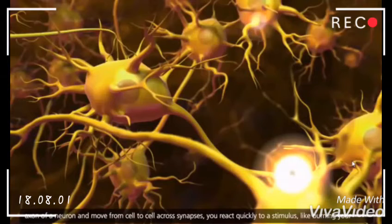Because nerve impulses move very rapidly down the axon of a neuron and move from cell to cell across synapses, you react quickly to a stimulus like burning your finger.